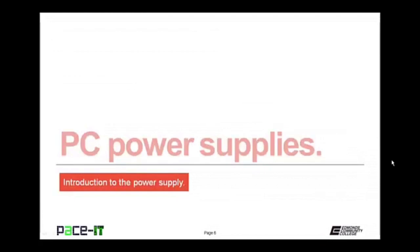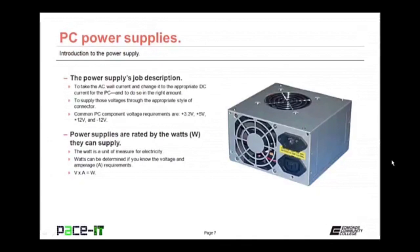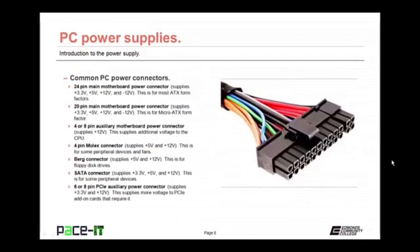Now let's talk about the PC power supply. Its job is to take the AC wall current and change it to the appropriate direct current that the PC requires — and to do so in the right amount. Not only does it need to supply the correct amount of DC current, but also through the appropriate style of connector. The common voltages a PC requires are 3.3 volts, 5 volts, 12 volts, and negative 12 volts. Power supplies are rated by the watts they can supply. Watts can be determined if you know voltage and amperage — the formula is volts times amperage equals watts.